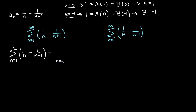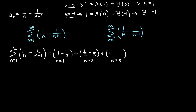When n equals 1, we get 1 over 1 minus 1 over 2, so that's 1 minus a half. Adding the second term (n equals 2): 1 over 2 minus 1 over 3. Adding the third term (n equals 3): 1 over 3 minus 1 over 4. We skip a bunch of terms. The last term is the kth term: plugging in k gives 1 over k minus 1 over k plus 1.